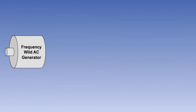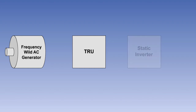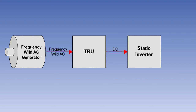Some aircraft types, which have a frequency-wild AC distribution system, use transformer rectifier units to feed static inverters to supply the aircraft's normal constant frequency requirements. This is done by using the TRU to change the frequency-wild AC into DC, and then using the DC to power the inverter, which will produce a constant frequency AC output.